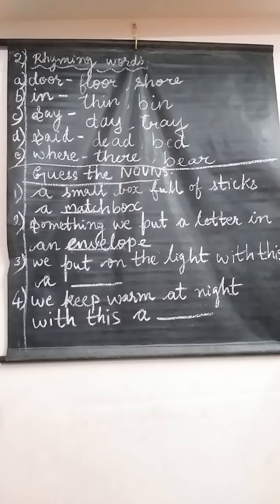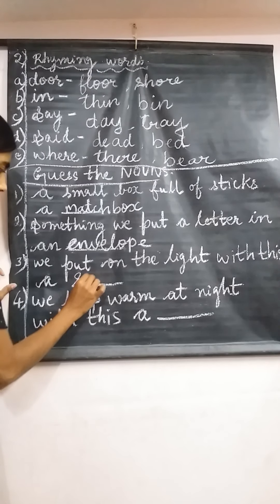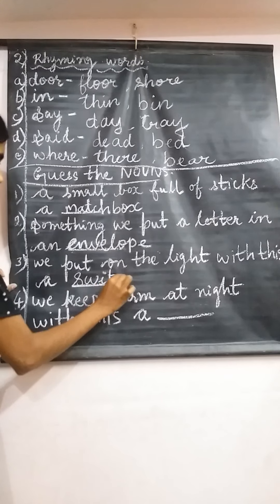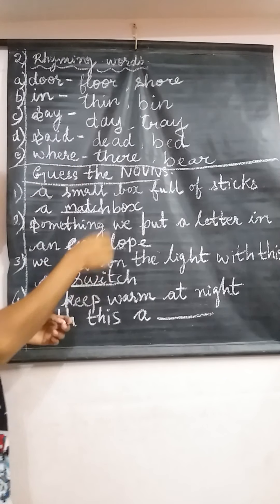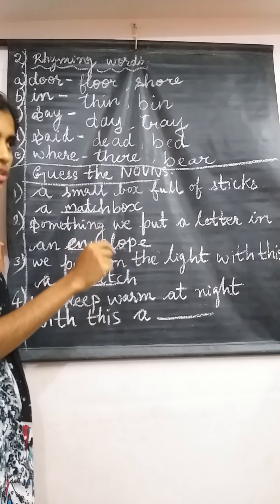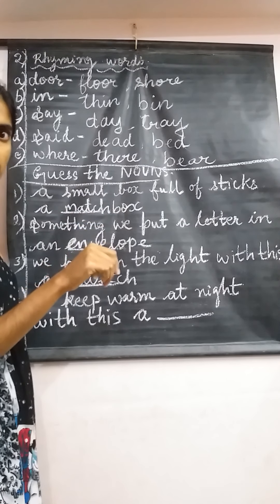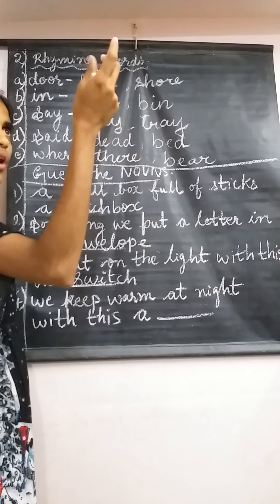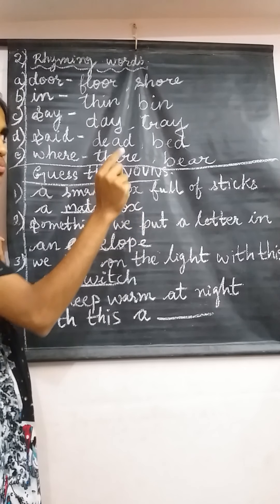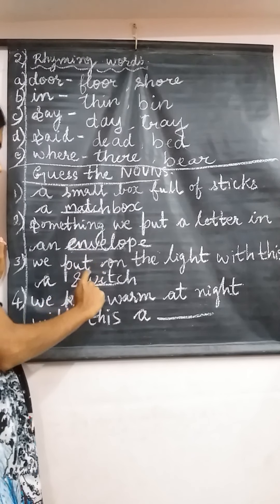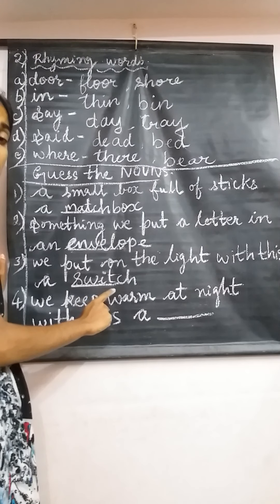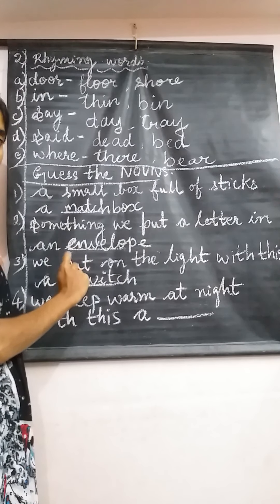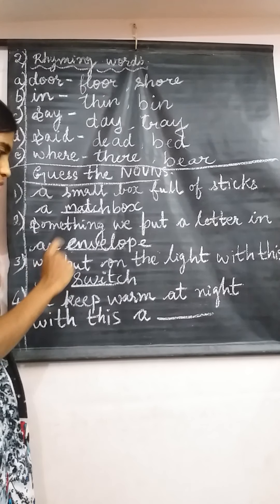Next: 'We put on the light with this — a dash.' With what do we put on the light? We use a switch. In your houses when your parents say go and put on the light, you go and use the switch — we switch on the light, we switch off the light. So the answer is a switch.